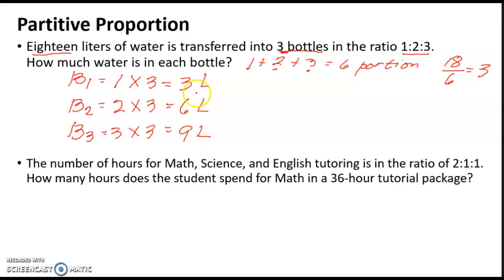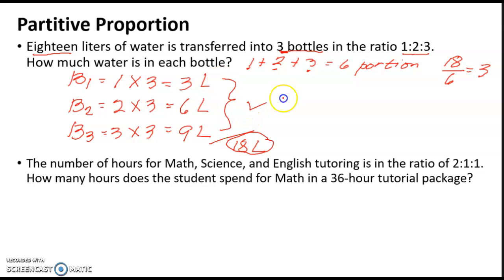If we add the results — 3 plus 6 plus 9 — we get 18 liters in all, which proves our answers are correct. That's how we solve partitive proportion. For example number two, the number of hours for math, science, and English tutoring is in the ratio 2:1:1.